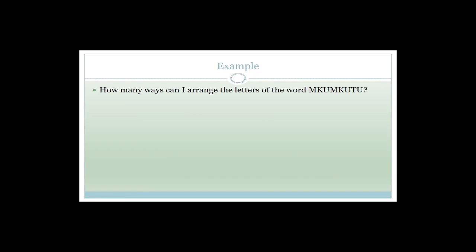Let's look at another example: the letters that make 'mkumkutu'. How many ways can we arrange these letters? There are eight letters total, so it starts as 8!. But some letters are repeated: two m's, two k's, three u's, and one t. When letters are repeated, we divide by the factorial of each repeated count.